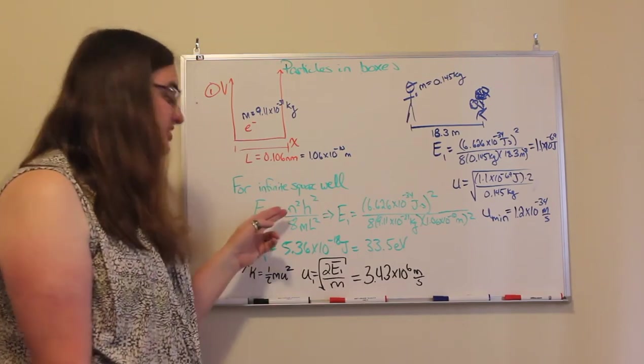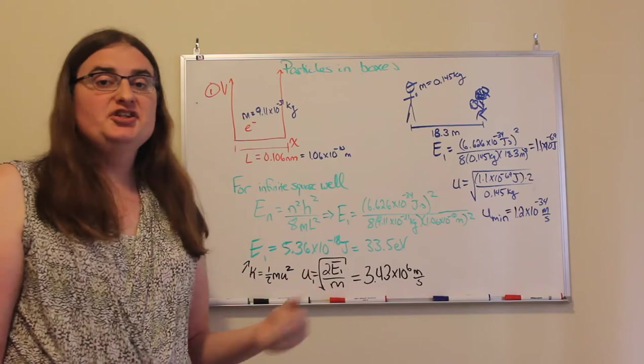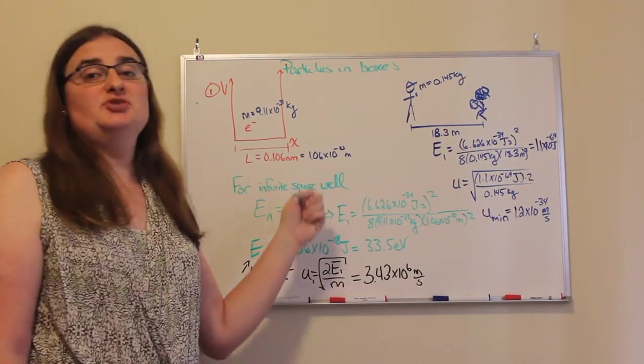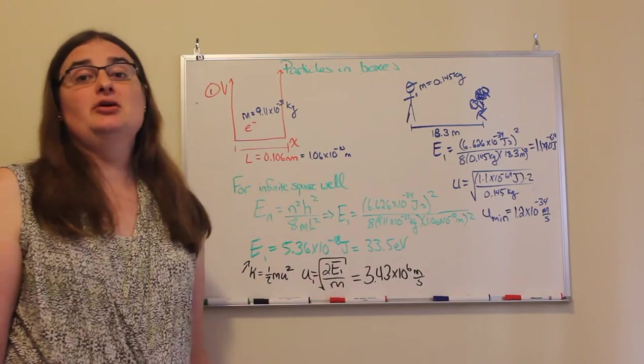And since the energy levels go like n squared, our next energy level would be 4 times this, then 9 times, 16 times, 25 times, and so on.